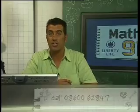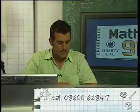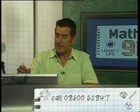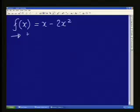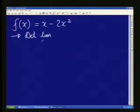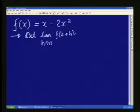I'm going to finish off tonight's show with a nice question on first principles and then follow directly by a question on tangents. The question gives us a function: f of x is given as x minus 2x squared. The first question, for six marks, is to determine the limit when h approaches 0 of f of 2 plus h minus f of 2, divided by h.